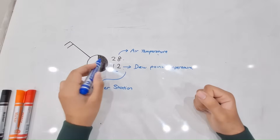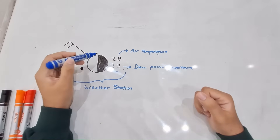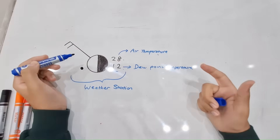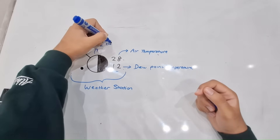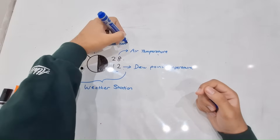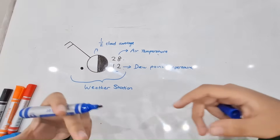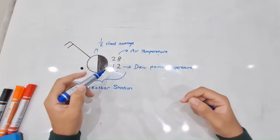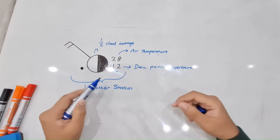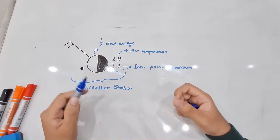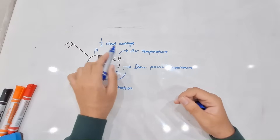Next we can see this circle, which gives you the cloud coverage at an area. We can see that this circle is partially shaded — half the circle is shaded in — so that means there is one-over-two, which is half, cloud coverage. Remember there are six different types of cloud coverage, and it's very important to know them because if the examiner gives you a random one, you have to know exactly what you're looking at.